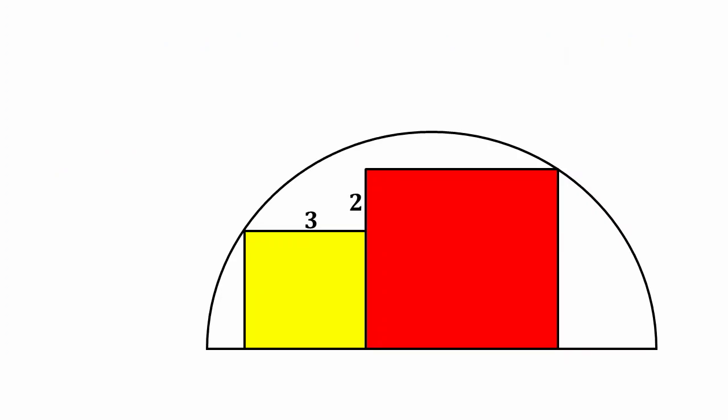The side length of the yellow square is 3 and the side length of the red square is 5. This point is the midpoint of the diameter of this semicircle. Let this be C. Let this length be x. Then the remaining length of the red square will be 5 minus x.